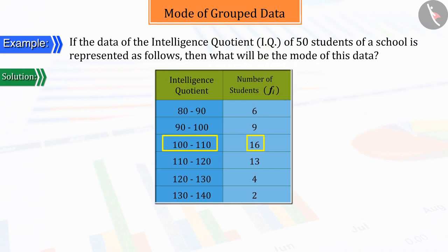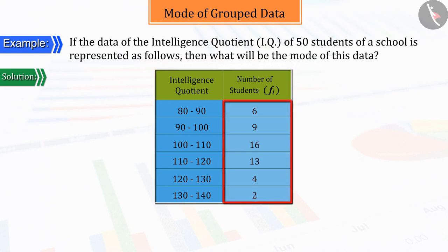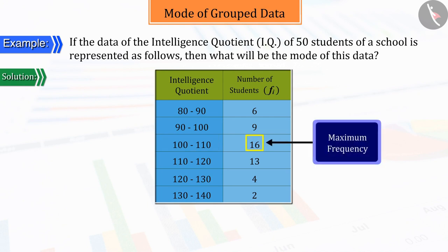Mode is a value inside the class with the highest frequency, but remember, in a grouped frequency distribution, mode cannot be determined merely by looking at the frequencies. Instead, from frequencies, we can find the class whose frequency is more, which is called the modal class.